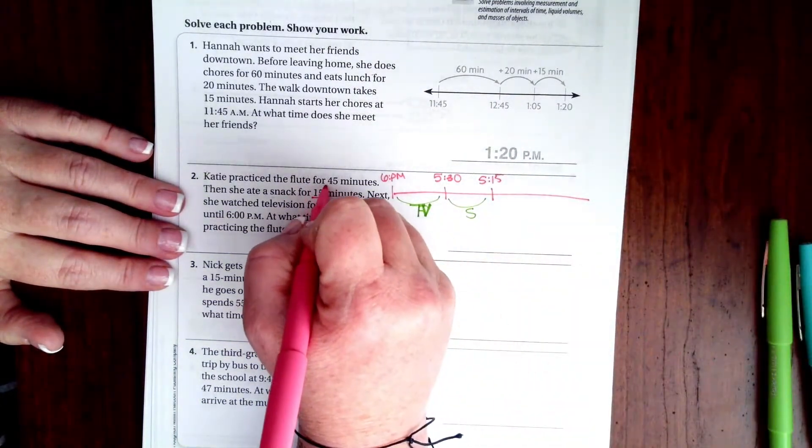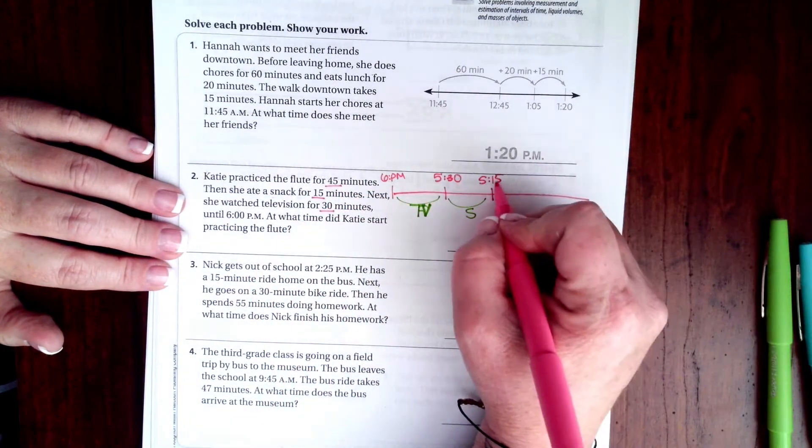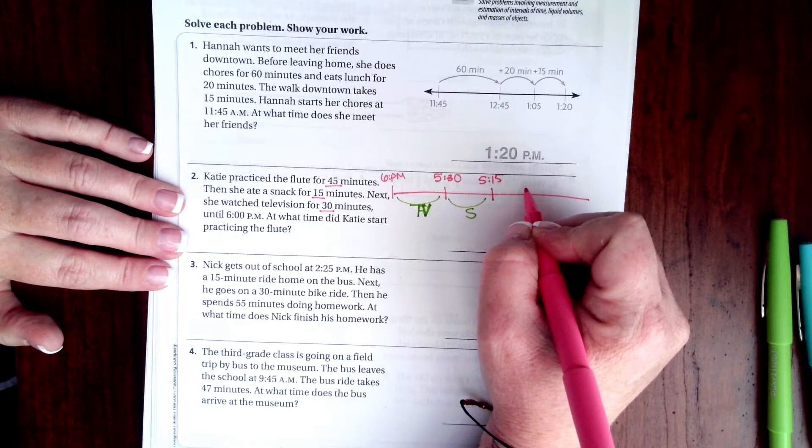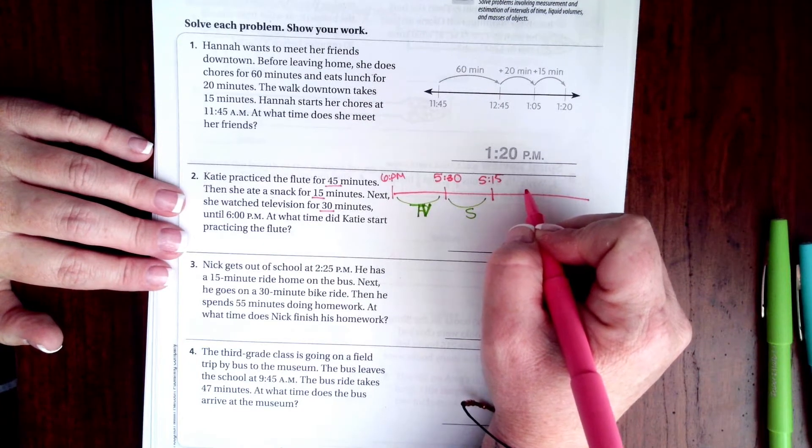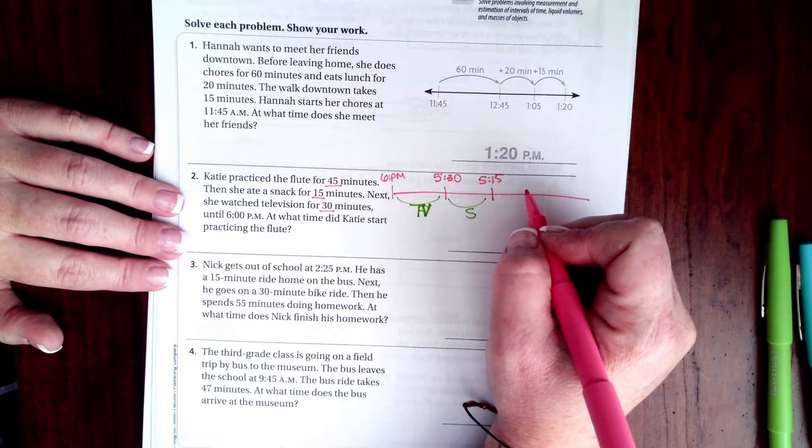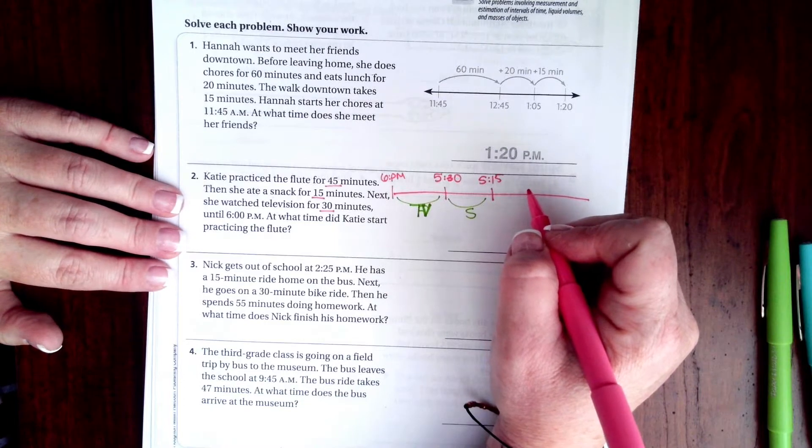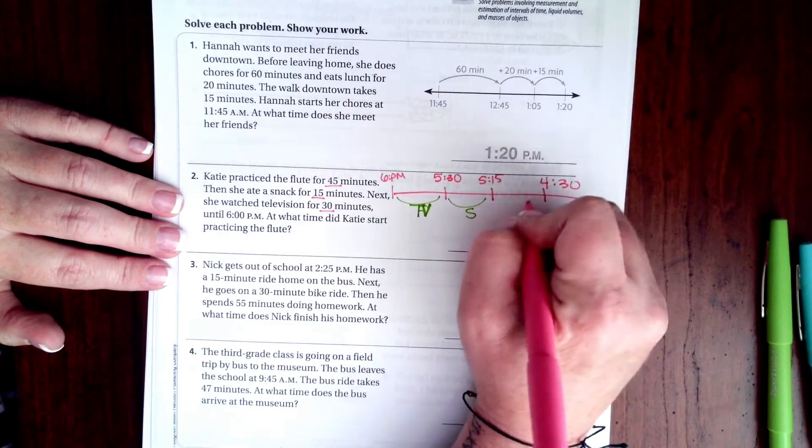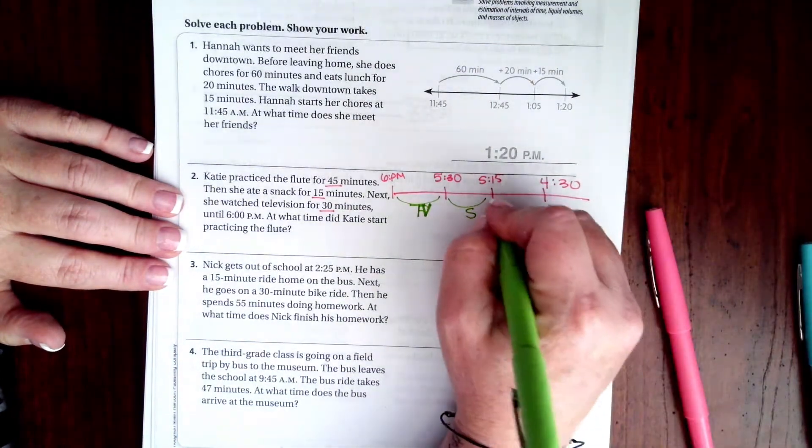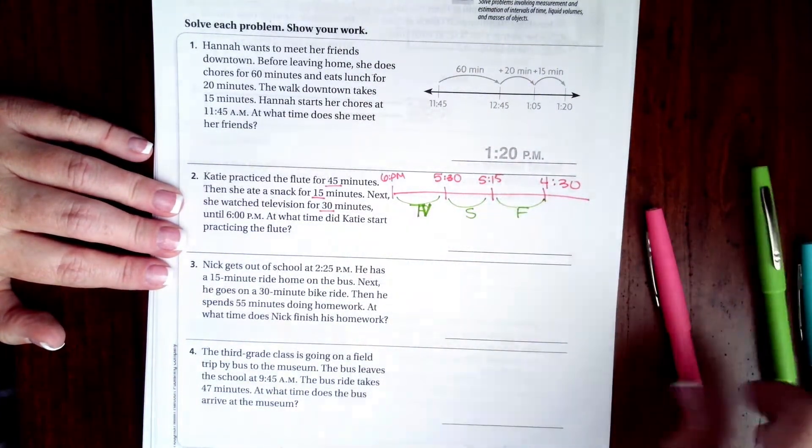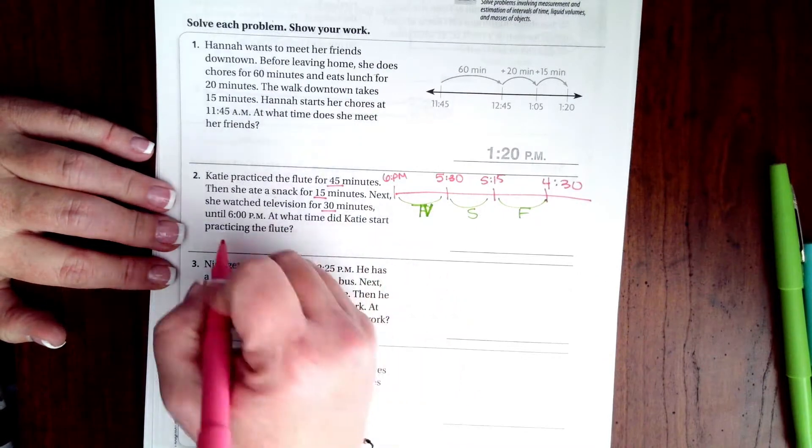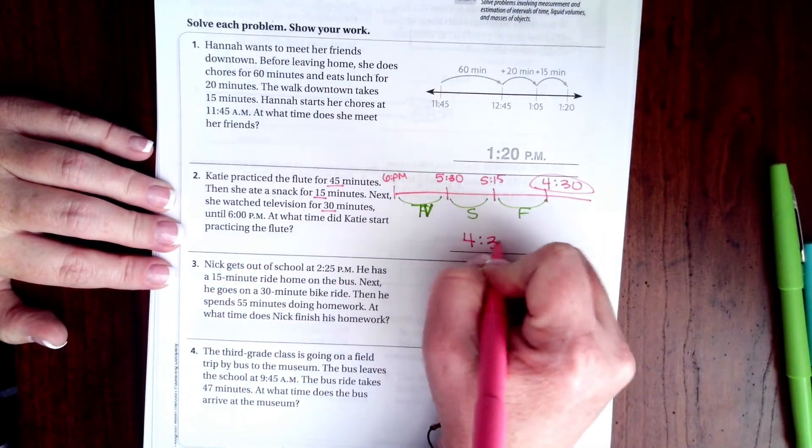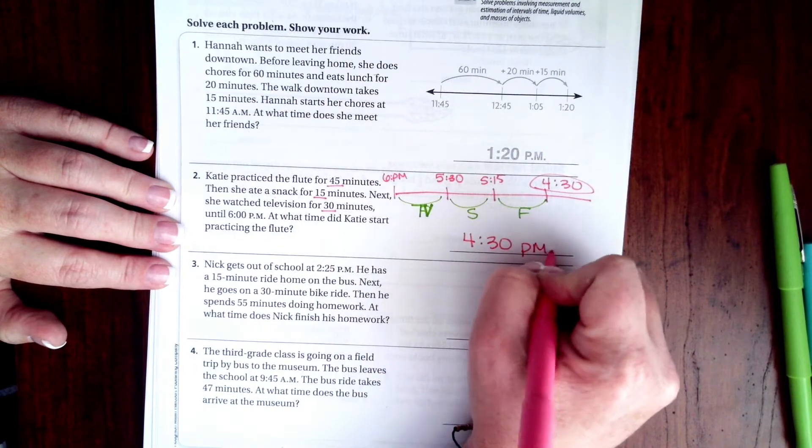Now she practiced flute for 45 minutes. If I go back 15, that gets me to 5:00, then if I take away the other 30, because 30 and 15 is 45, that gets me to 4:30. That was her flute time. So Katie started practicing at 4:30 PM.